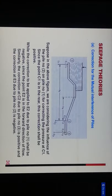Correction of mutual interference of piles: this is an example. Suppose in the above figure we are considering the influence of pile number two on pile number one, correcting the pressure at C1. Since point C1 is in the rear, this correction shall be positive, while the correction to be applied at E2 due to pile number one shall be negative since pile E2 is in the forward direction of flow. Similarly, correction at C2 due to pile number three is positive, and correction at E3 due to pile number two is negative.